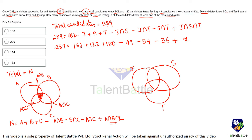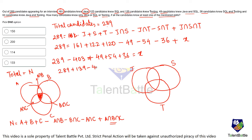Computing: 161 plus 122 plus 120 equals 403. The sum of intersections is 49 plus 54 plus 36 equals 139. So 289 equals 403 minus 139 plus x, giving 289 equals 264 plus x, and x equals 25. So 25 students know Java, SQL, and Testing — all three skills.